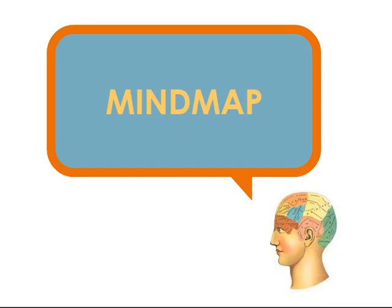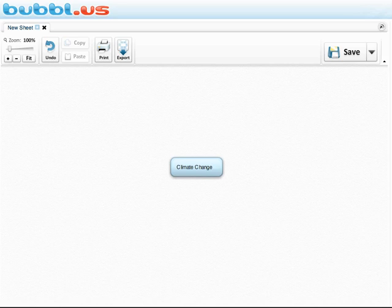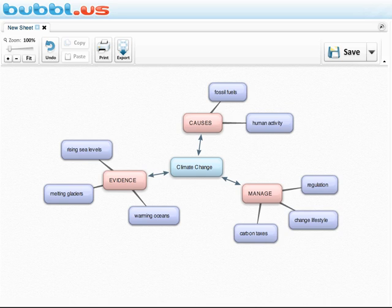And finally, the mind map, also known as webbing or clustering. The goal is to put down all your ideas in any random fashion and then group or link them together. You might start by writing a general topic idea in the middle, and then randomly adding any related ideas around it. Once you're done, see if you can group together any of your ideas around different central themes.